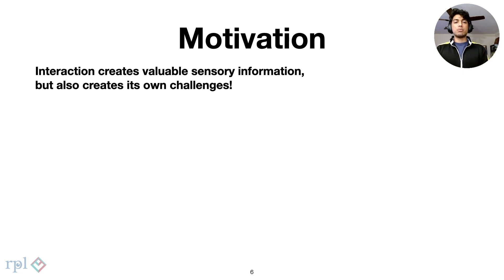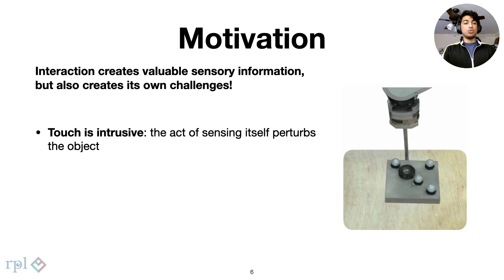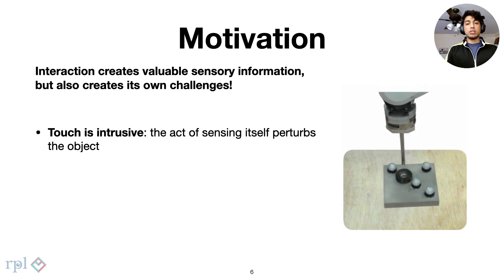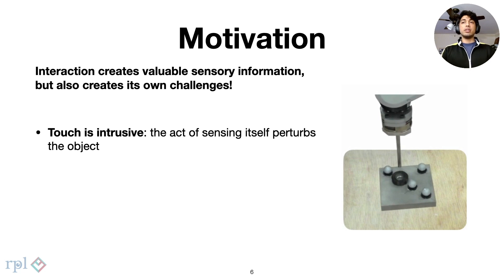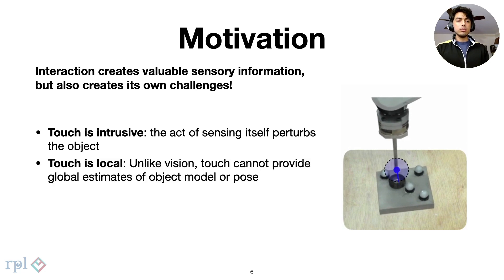Interaction, however, comes with its own set of problems. Firstly, touch is intrusive. An implementation must infer object models while also accounting for the motion induced by the interaction. And secondly, touch is local. Unlike a camera, we do not get global estimates of an object's pose or its shape. This calls for a principled approach to mapping and localizing these objects.